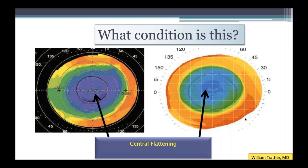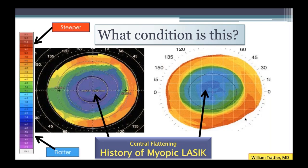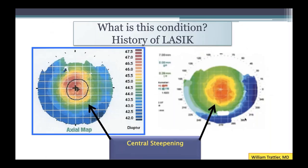Now let's change the topic and talk about LASIK patterns. When a patient undergoes myopic LASIK, you get a typical map with a flat, blue center and a red, steep periphery — you're flattening the middle and the edges are a little steeper. For post-hyperopic LASIK, you see central steepening with a red center. This can look a little bit like keratoconus, but there are distinct differences. Just be aware of these patterns when reading maps.